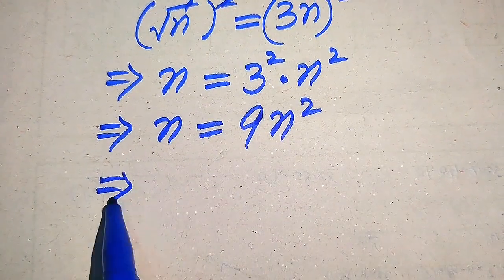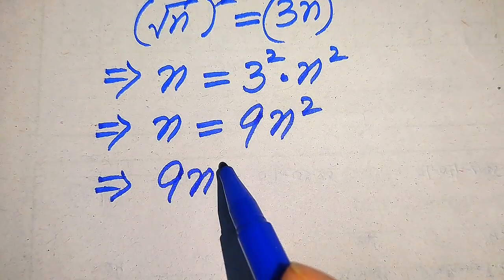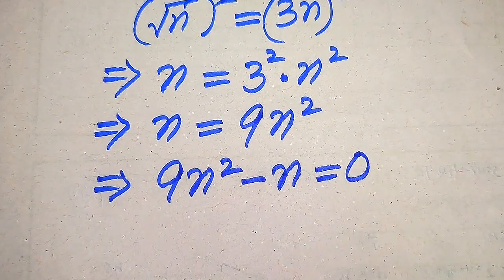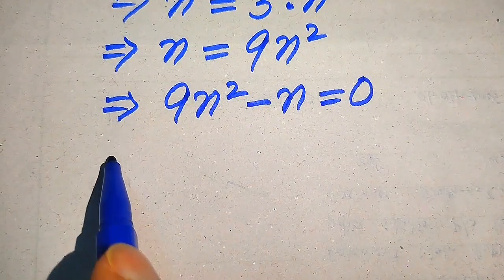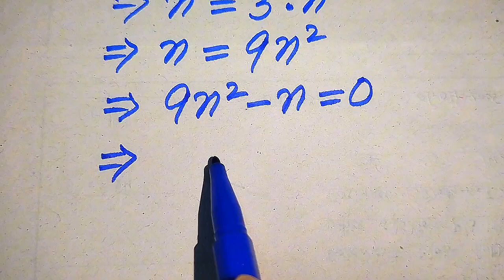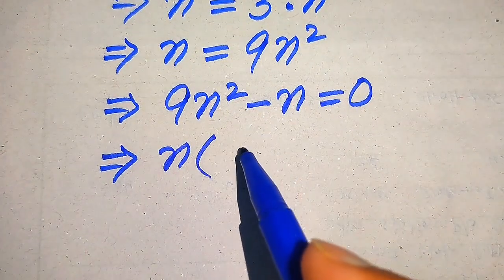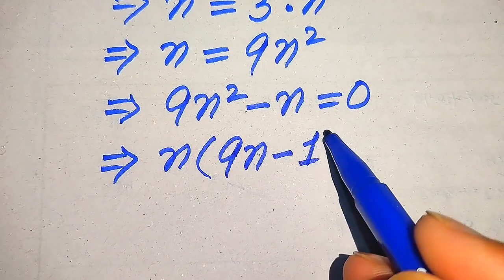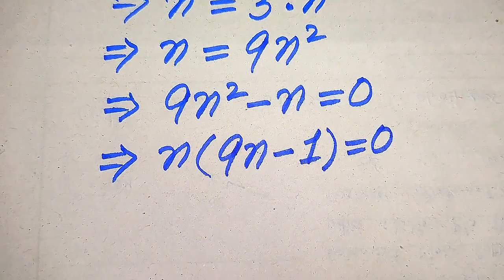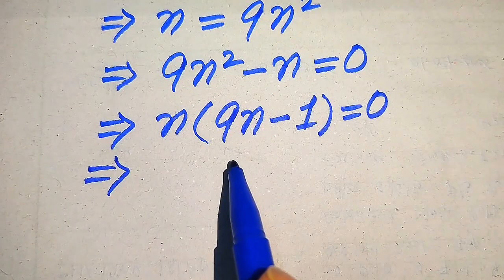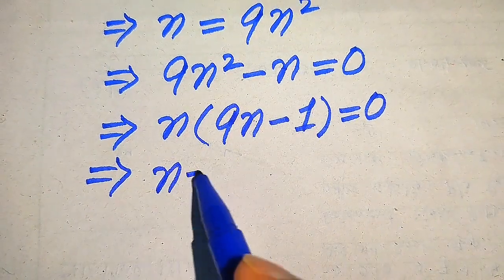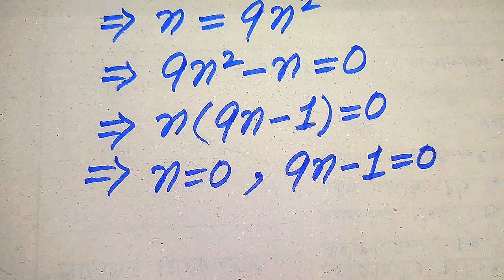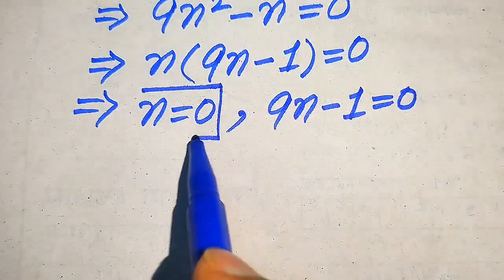Now for the values of n, we move this n to the right-hand side. It will be written as 9n squared minus n equals 0. In the next step, both terms involve n, so we take n as common, giving us n times (9n minus 1) equals 0. We divide this into two cases: the first case is n equals 0, and the second case is 9n minus 1 equals 0.